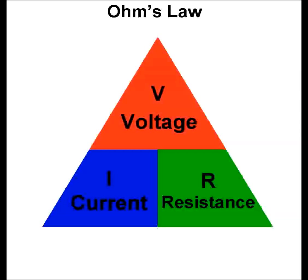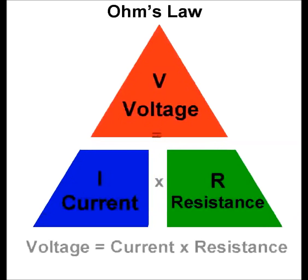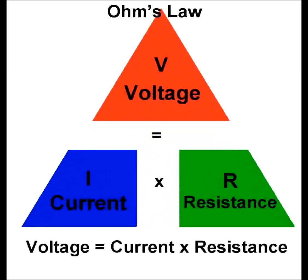There is a fixed relationship between voltage, current and resistance. It's defined by Ohm's law and we use this triangle to explain it. Voltage is equal to current times resistance.